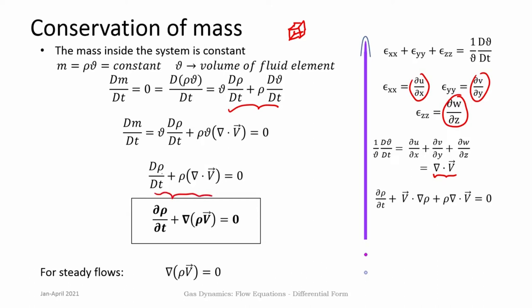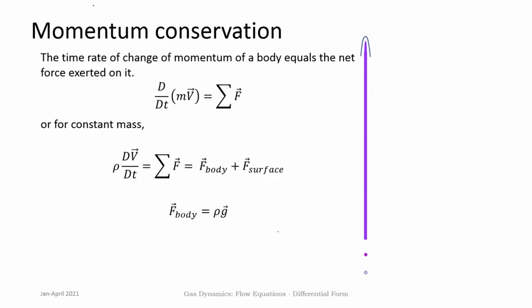We get the continuity equation: d rho/dt + rho del dot v = 0. Expanding d rho/dt we get ∂rho/∂t + v dot del rho, and together this can also be written as ∂rho/∂t + del dot (rho v) = 0. For steady flow del dot (rho v) = 0. This is a compressible fluid flow, so density is a variable, not a constant. This is the conservation of mass.